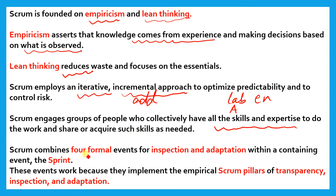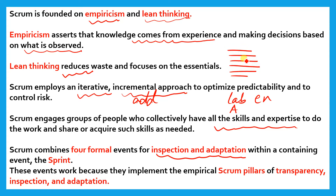Scrum combines four formal events for inspection and adaptation within a containing event — the Sprint. As we discussed in our last lesson, the Product Owner first makes the Product Backlog, writing all the items needed to build a house. Then one by one we take items from it — suppose we take the first one, which is framing. That sprint contains four formal events which we will discuss later in detail.